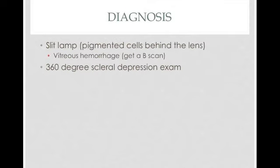Diagnosis is made by a slit lamp and a 360-degree scleral depression exam. In cases where there is a vitreous hemorrhage, you won't be able to see anything on the slit lamp, so you have to obtain a B-scan.